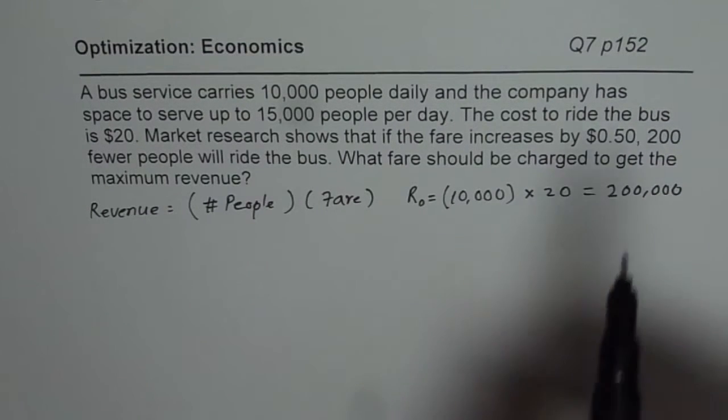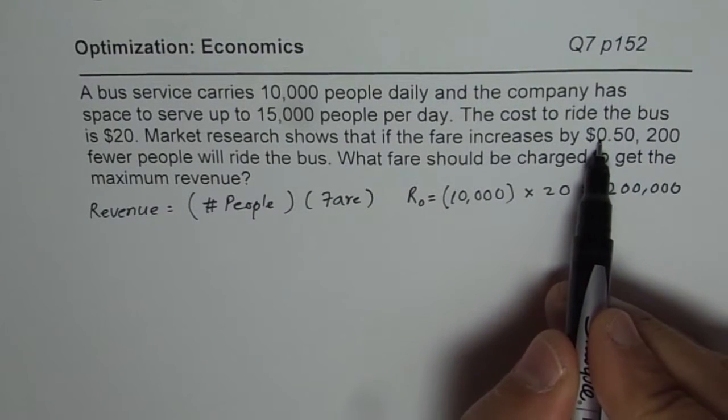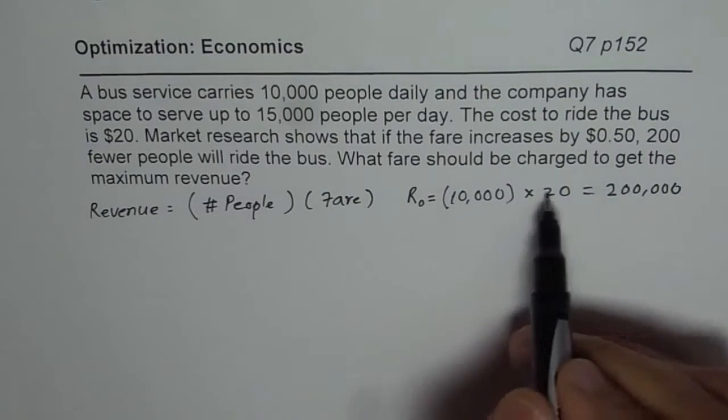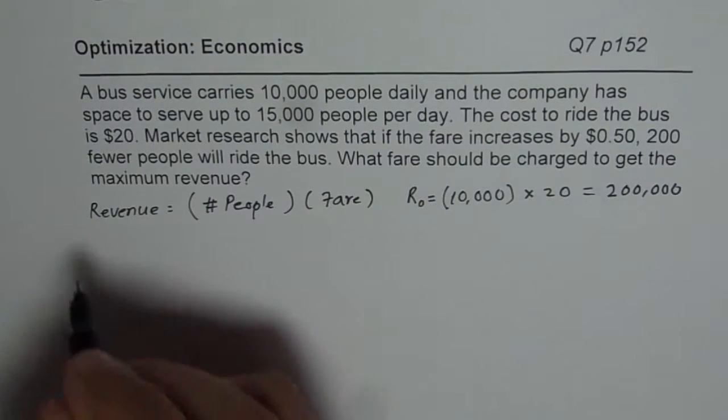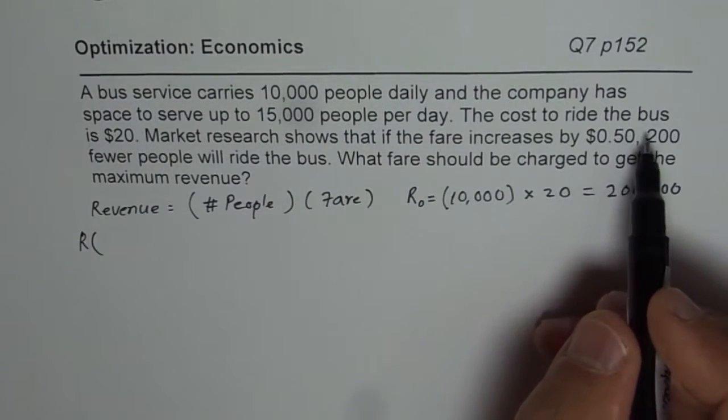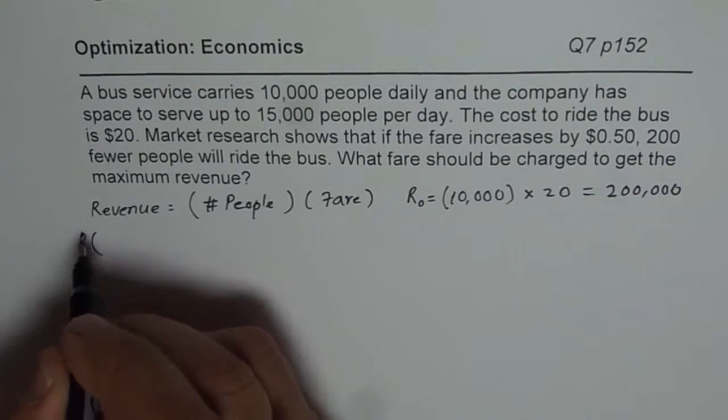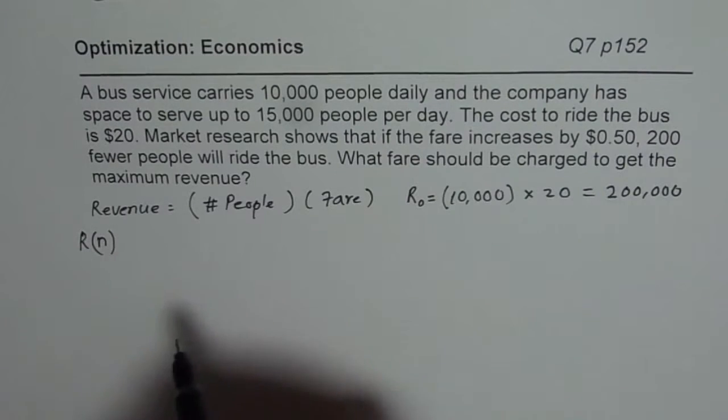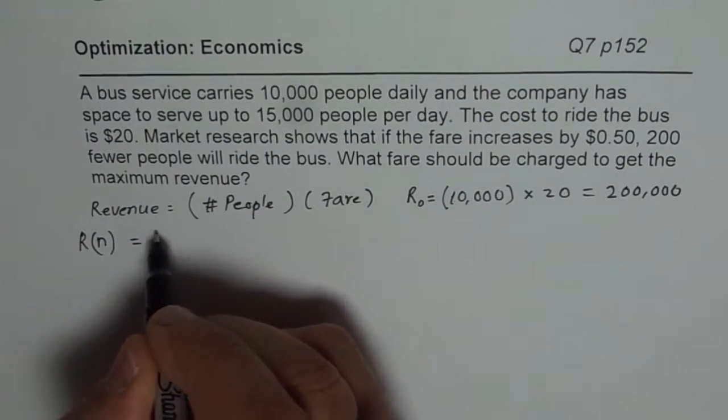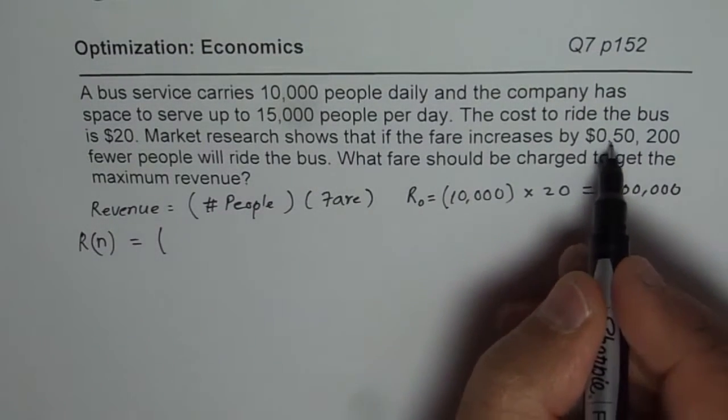Now the idea is if we increase the cost, then there are fewer people traveling, but there we could have more revenue. So let's figure that out. So we can write down equation when the cost is increased as number of 50 cents, number of 50 cents. So we'll call them N. So N is the number of 50 cents increase. So whenever you increase this cost, they're saying that the number of people will decrease by 200 for every 50 cent increase.